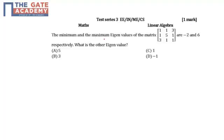The question is: the minimum and the maximum eigenvalues of the matrix 1 1 3 1 5 1 3 1 1 are -2 and 6 respectively. What is the other eigenvalue?